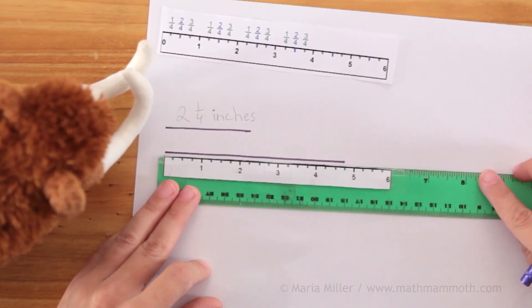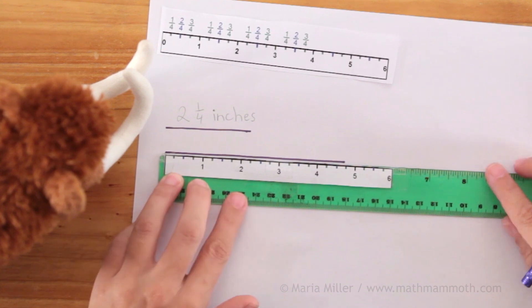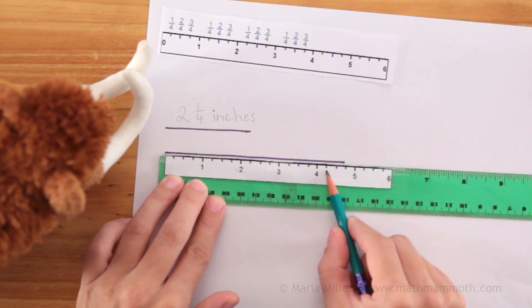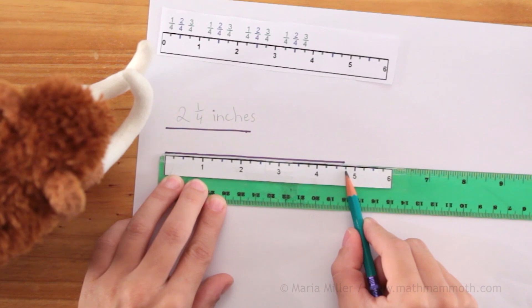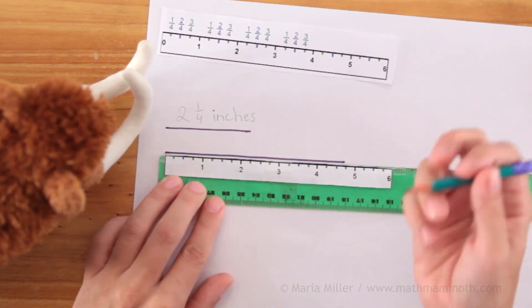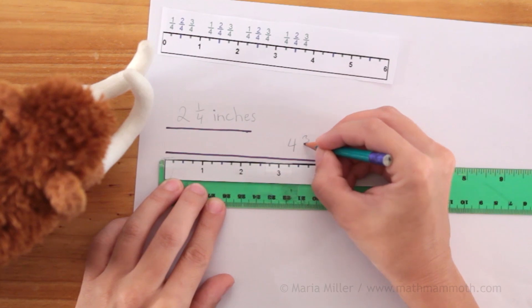This line. Okay, this is past four inches. And this would be the one-fourth mark. This is the one-half. And this is the three-fourths of an inch mark. So it is four and three-fourths of an inch.